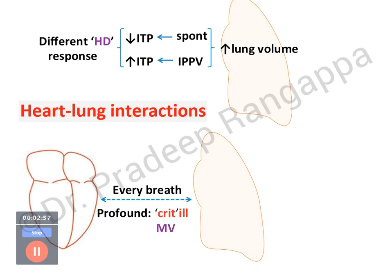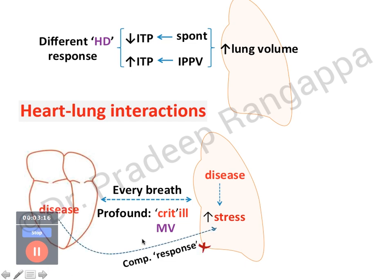With every breath, the more critically unwell the patient is, the more profound these breath-to-breath changes are in mechanically ventilated patients. Whenever there is a concomitant presence of lung disease requiring intubation, there is increased stress. Compounded by cardiovascular disease, the response is even more profound. When lung disease coexists with cardiac disease, the compensatory response gets compromised, leading to more pronounced hemodynamic changes.